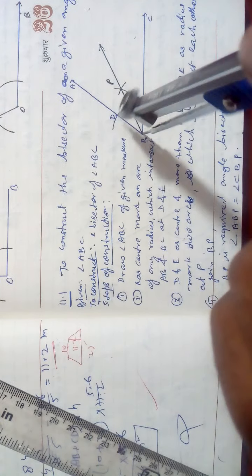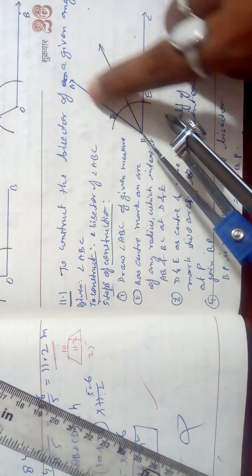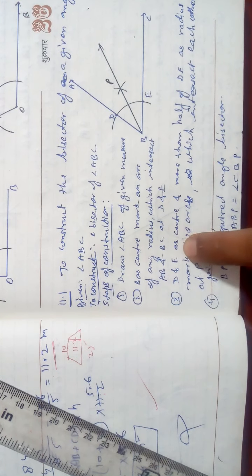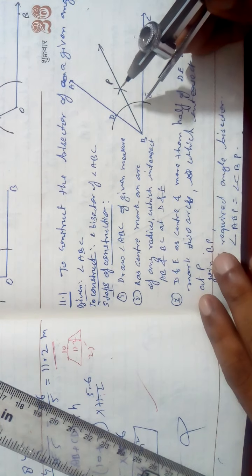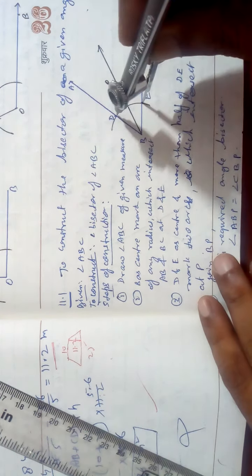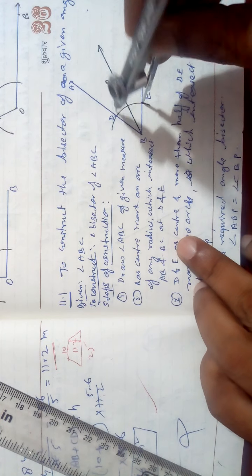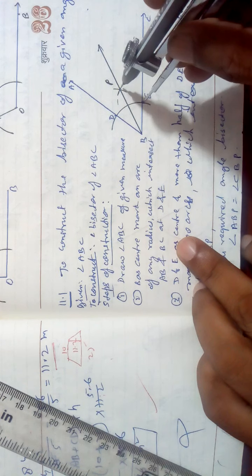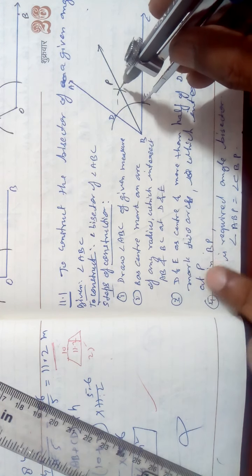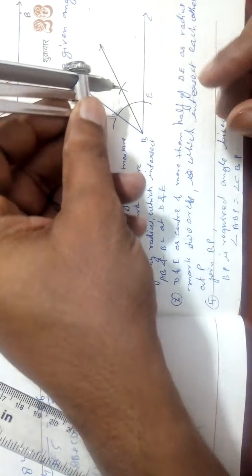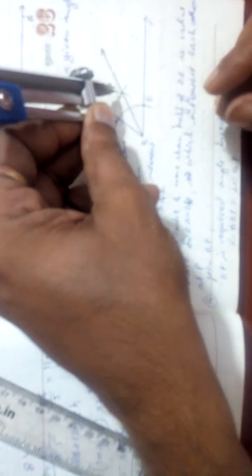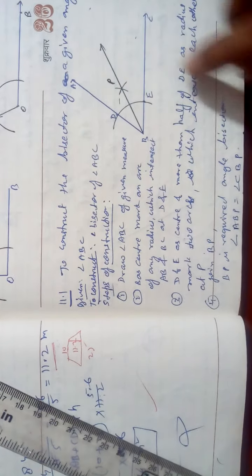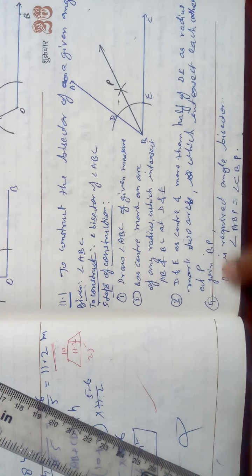Put the compass at D and make any radius, then mark the arc — you can see it is intersecting the two arms at D and E. Now with D and E as centers, put the compass at D and E. Take more than half of DE, mark an arc on this side and from D also mark an arc inside. Both arcs are intersecting at a point, which is your bisector.